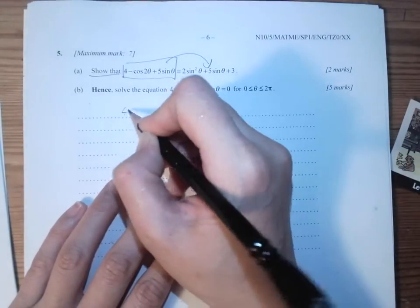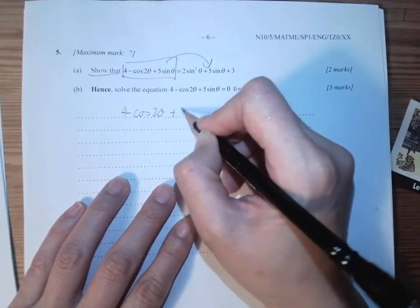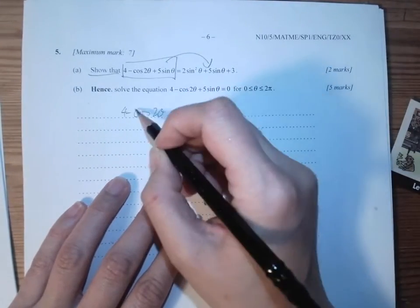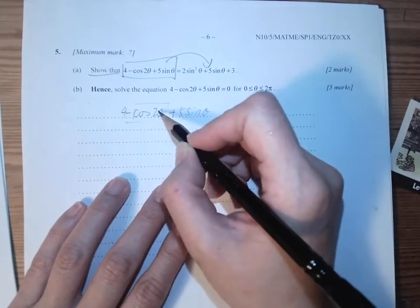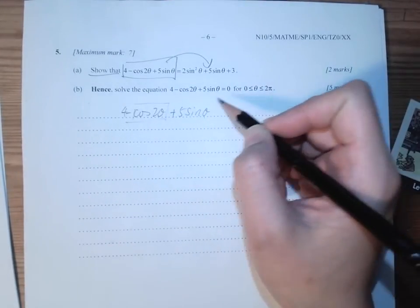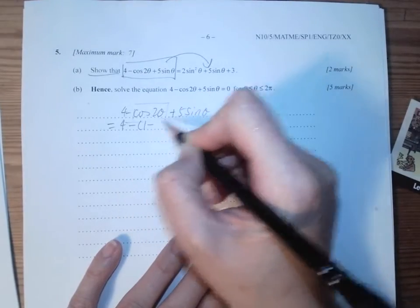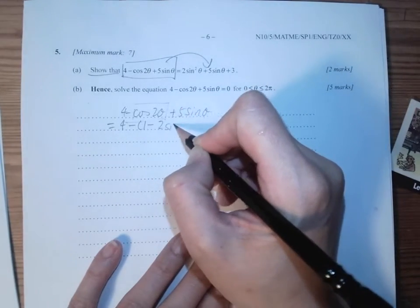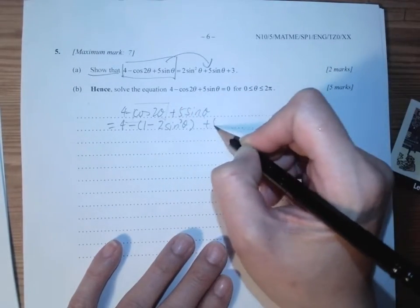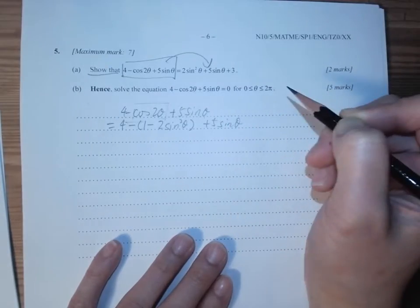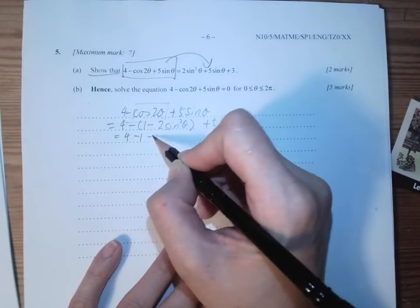So we have 4cos²θ - cos2θ + 5sinθ. I have a double angle formula here, but then this is the sine on the other side, so I'll use the sine one. So we have 4 - (1 - 2sin²θ) + 5sinθ. So I rearrange that: 4 - 1